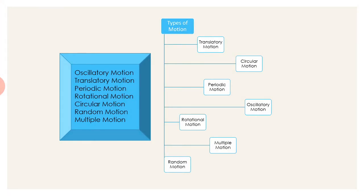Here is a web chart of what are the types of motion: translatory motion, circular motion, periodic motion, oscillatory motion, rotational motion, multiple motion and random motion.